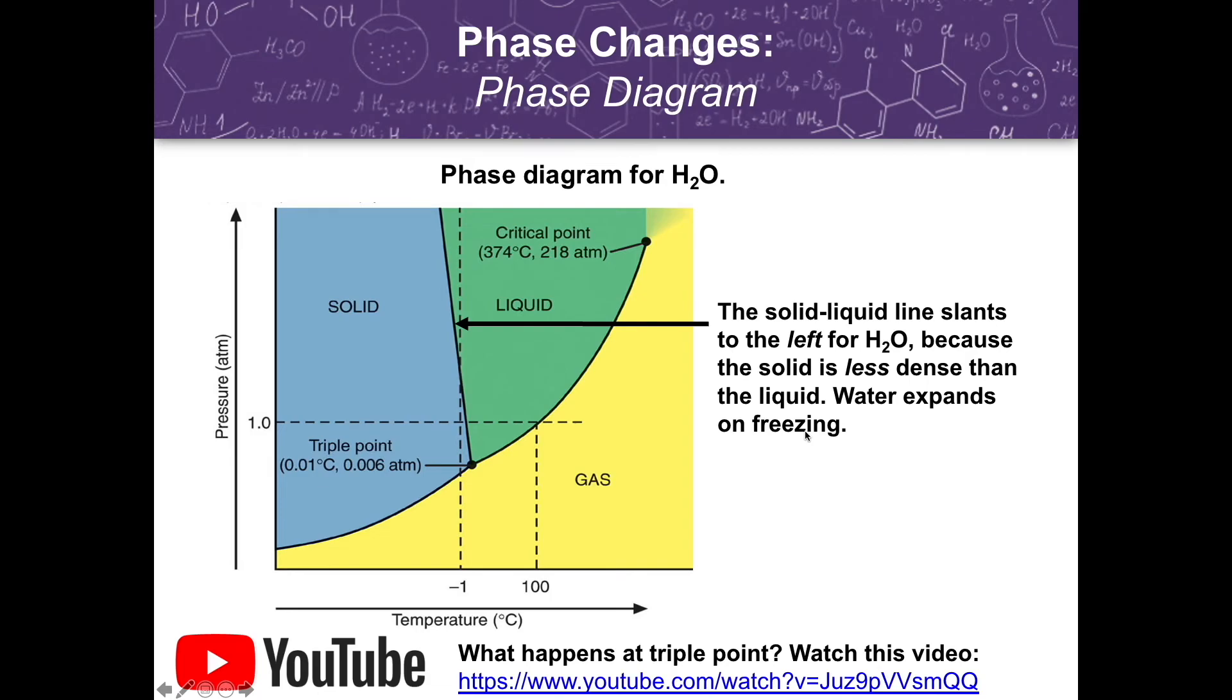For the phase diagram of water, we also have the solid-liquid line that slants to the left for water because the solid is less dense than the liquid, and water expands on freezing.